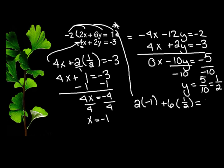Plus 6 times y, which is 1 half. And hopefully, if we're right, it will equal 1. So 2 times negative 1 is negative 2. 6 we write over 1, and we multiply straight across. So we have 6 halves.